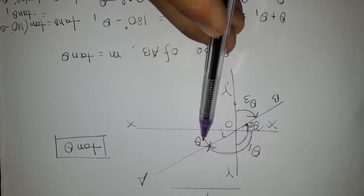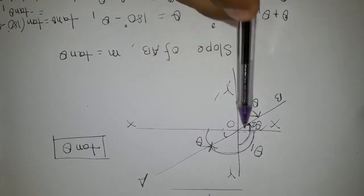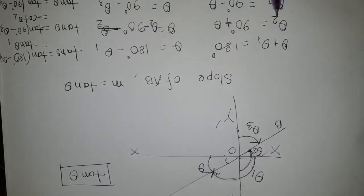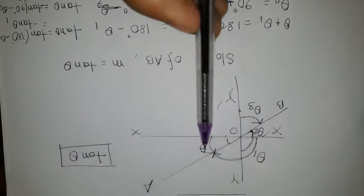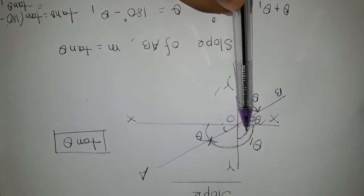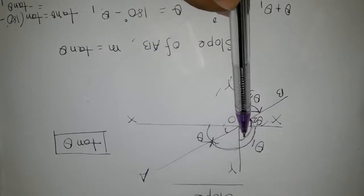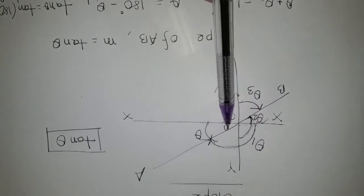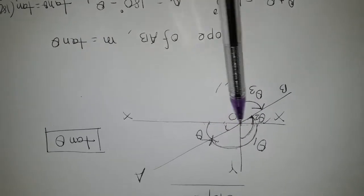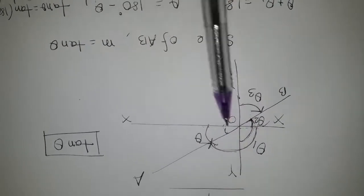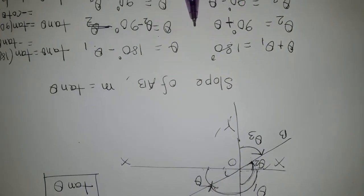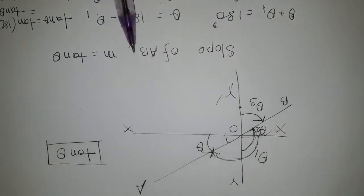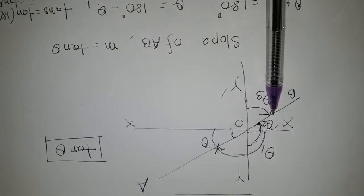As you see in the figure, theta plus theta 1 equals 180 degrees. So theta equals 180 degrees minus theta 1. Similarly, theta 2 equals 90 degrees plus theta, as you see in the figure. Theta 2 is obtained by adding 90 degrees plus this angle. This small angle is equal to theta because it is opposite, so you can get 90 degrees plus theta. Therefore, theta equals theta 2 minus 90 degrees. Finally, theta 3 is the angle opposite to this angle, obtained by subtracting from 90 degrees.